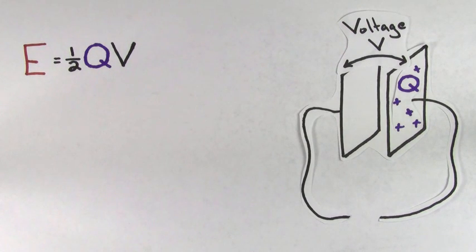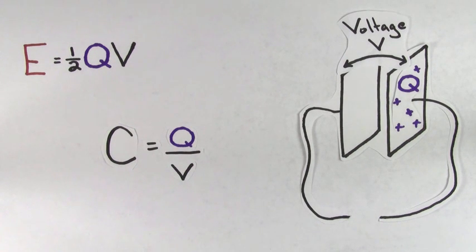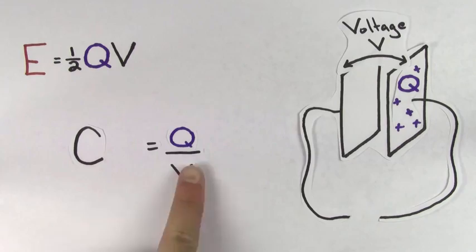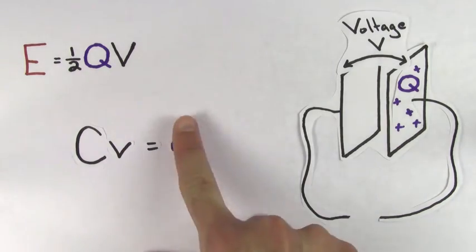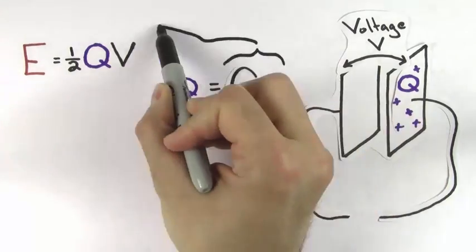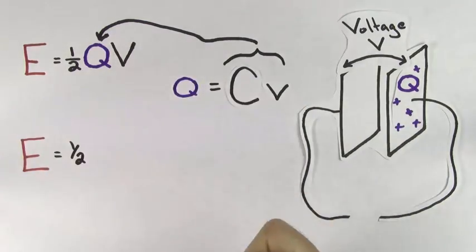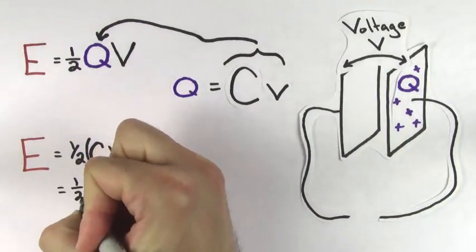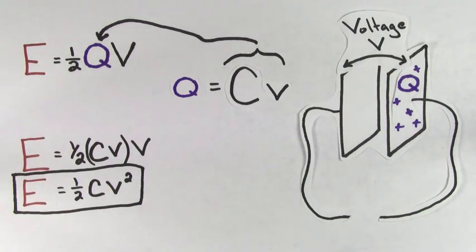There's another form of this equation that can be useful. Since capacitance is defined to be charge over voltage, we can rewrite this as charge equals capacitance times voltage. If we substitute the capacitance times voltage in for the charge, we see that the energy of a capacitor can also be written as one half times the capacitance times the voltage across the capacitor squared.